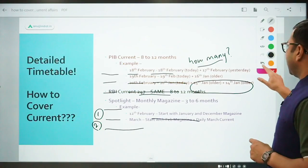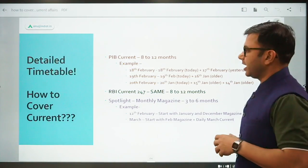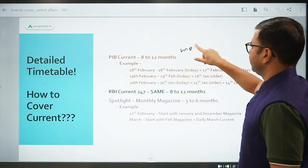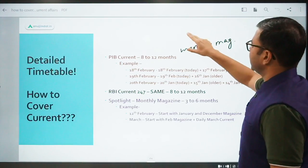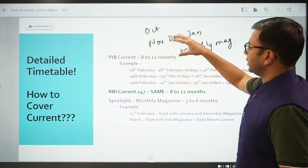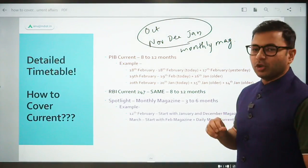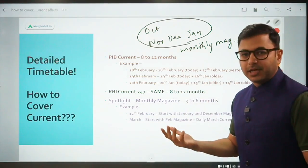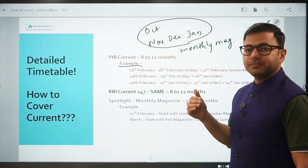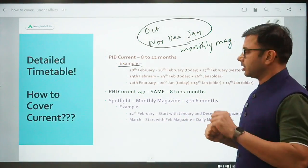How to divide your days - I've taken an example to help you understand how you're going to cover it right now. February is going on and you're covering PIB current affairs. The first thing you have to do is pick up monthly magazines. The monthly magazine of January is out, December is out, November is out, October is out. Your first priority is to cover these magazines one by one, month by month, because your speed increases. The second priority is to simultaneously cover daily PIB so that you don't have any backlog by the time you reach March. You should not be in a situation where the entire February PIB 247 has not been covered.